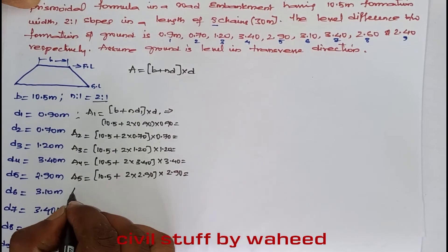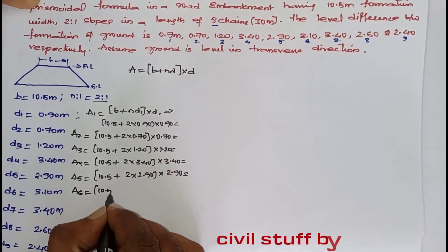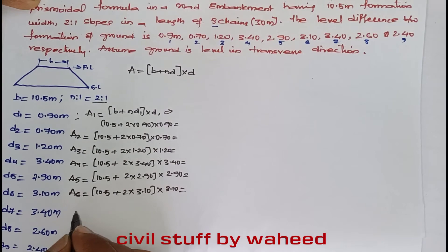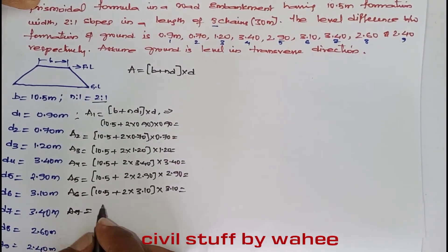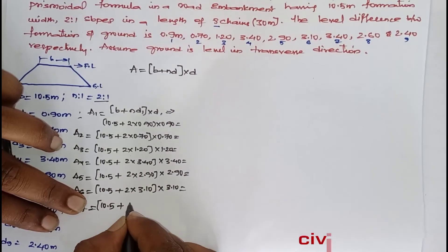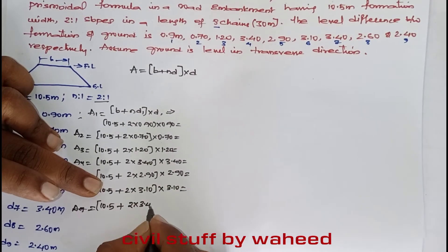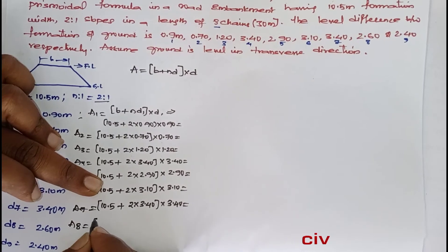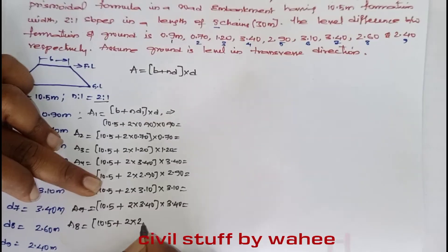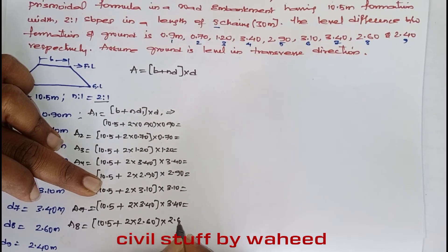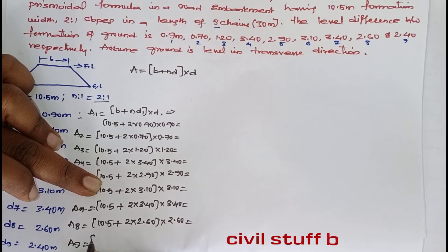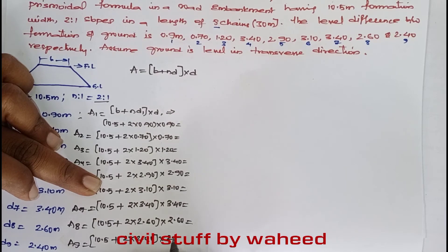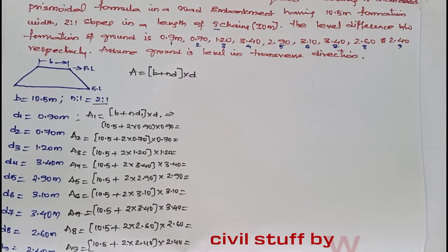Continuing the area expressions: A5 = (10.5 + 2×2.90) × 2.90, A6 = (10.5 + 2×3.10) × 3.10, A7 = (10.5 + 2×3.40) × 3.40, A8 = (10.5 + 2×2.60) × 2.60, and A9 = (10.5 + 2×2.40) × 2.40.